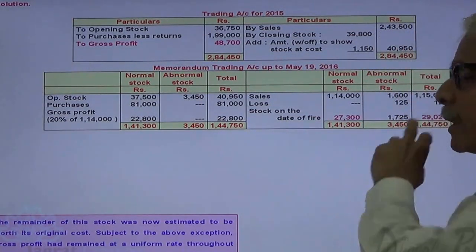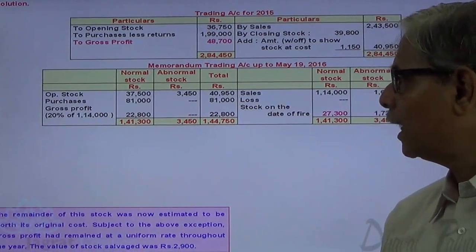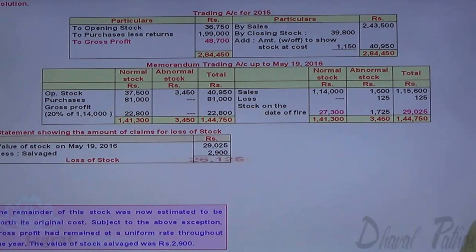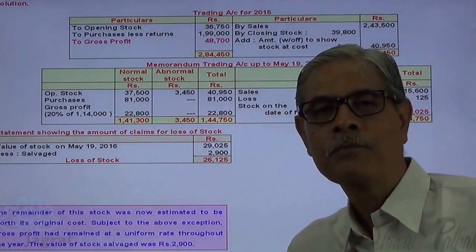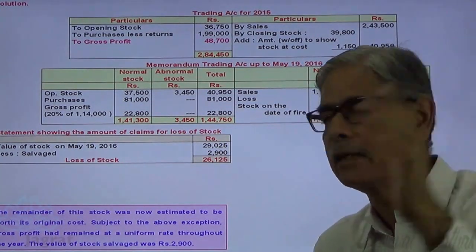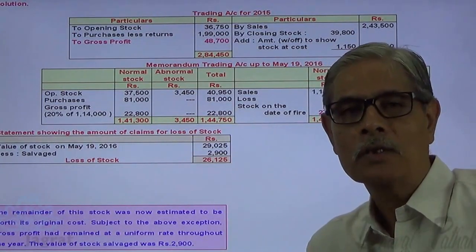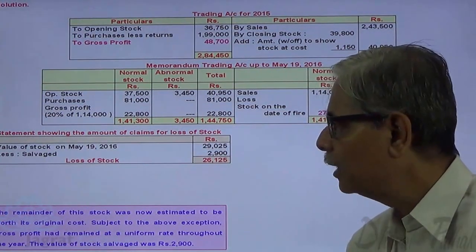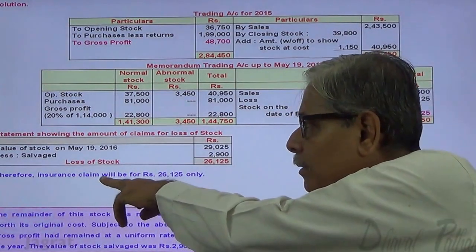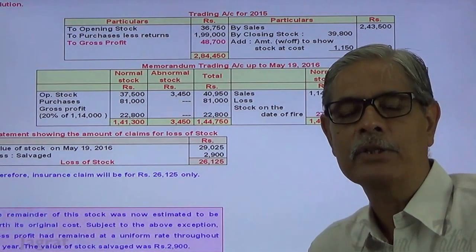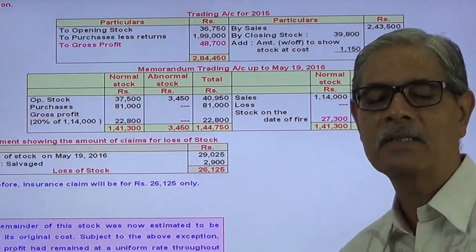Total stock existed at the moment of fire is the sum of normal stock Rs. 27,300 and abnormal stock Rs. 1,725. Out of that, stock salvaged is Rs. 2,900, giving loss by fire of Rs. 26,125. If the insurance policy is for Rs. 29,025 or more, the entire loss is recoverable. In the absence of under-insurance details, the insurance claim is Rs. 26,125, presuming either adequate or over-insurance. This is how the insurance claim is worked out.